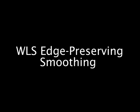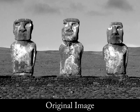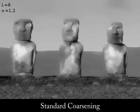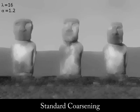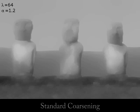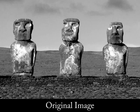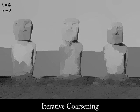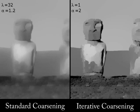In this work, we use the weighted least squares framework to perform edge-preserving smoothing. As you can see, this operator is able to progressively coarsen the image without introducing strong blurring, over-sharpening, or any other obvious artifacts. Applying the same operator in an iterative fashion generates coarsened images that tend towards a piecewise constant, which is desirable for some applications.